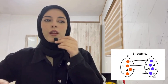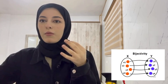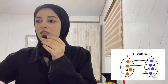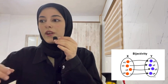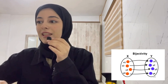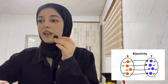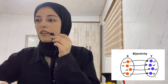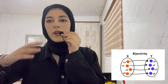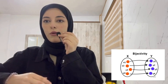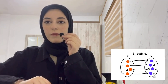Before we dive into the problem, let's talk about something important: bijection. Bijection is a type of relationship where each item in one set maps to exactly one unique item in another set, and every item in the second set is also mapped. We call this a bijection or one-to-one relationship.